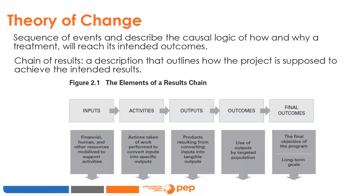The inputs are the resources at disposal of the intervention, including staff and budget. The activities are the actions taken or work performed to convert inputs into outputs. The outputs are the tangible goods and services that the intervention produces, directly under the control of the implementing agency. However, outputs — such as the number of beneficiaries reached, delivery service, and other tangible results — are not the objective of an impact evaluation. Impact evaluation goes beyond the chain of results. The outcomes in the chain of results are likely achieved once agents have benefited from the program, usually in the medium and long term.